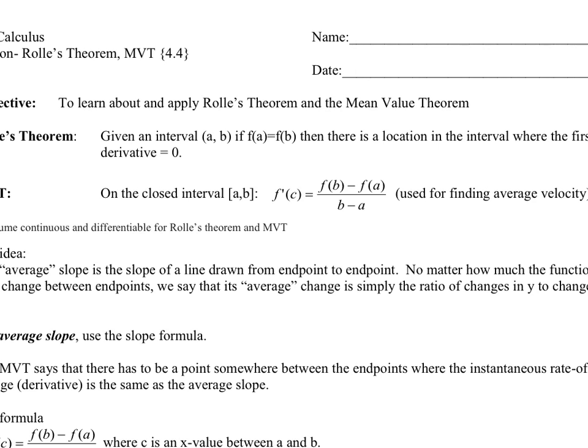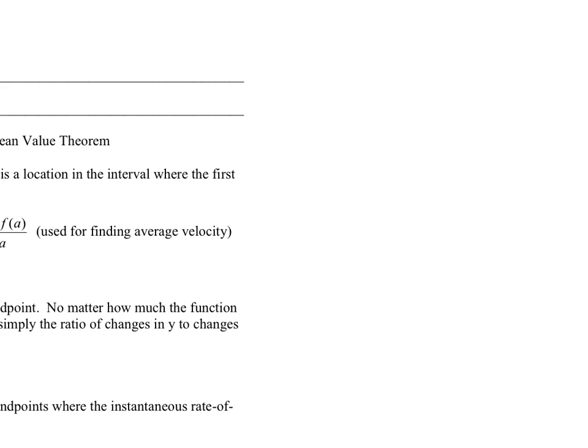Given an interval a to b, if f of a and f of b are equal to one another, then there's a location on the interval where the first derivative is equal to zero. I think intuitively you've probably already understood that, assuming you can parse the language, because it's intentionally weird the way they do it.